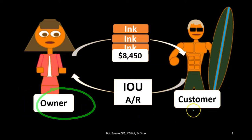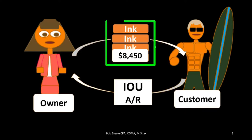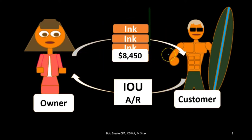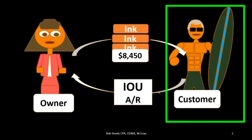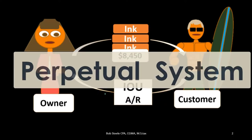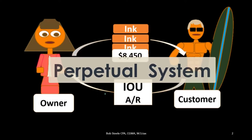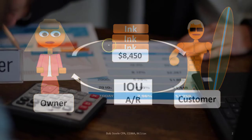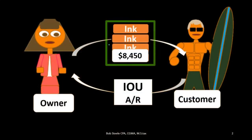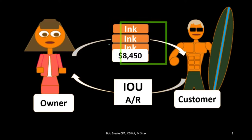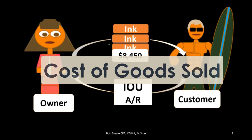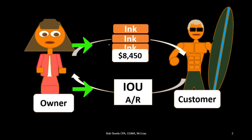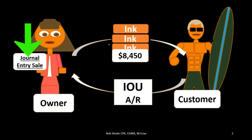We have here the owner and the customer. We're saying that we're selling this inventory — this ink — for a cost of $8,450 to the customer. The customer is not paying cash but paying an IOU to the owner. Typically under a perpetual system we break this out into two components: the IOU or accounts receivable and sales component, similar to what would be seen in a service company.